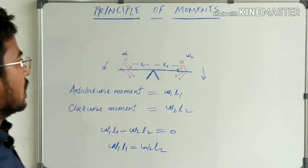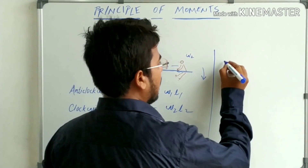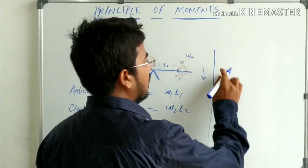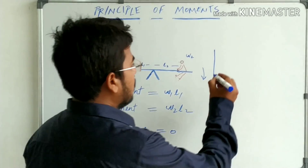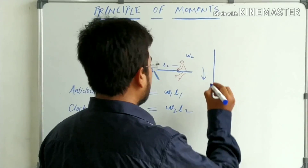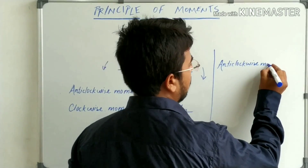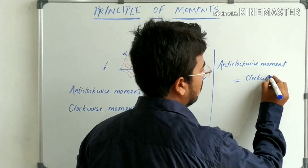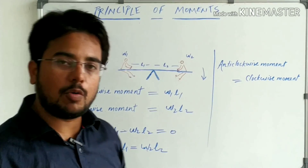The conclusion is that in the case of equilibrium of a body, the anticlockwise moment will always be equal to the clockwise moment.